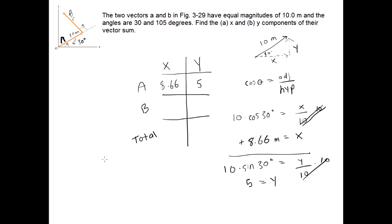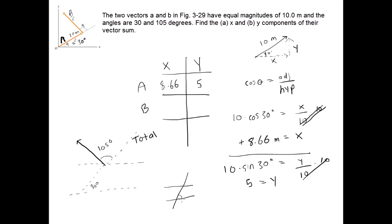Finding the components of vector B is a little more difficult because of the direction it's pointing. Vector B is pointing up and to the left, acting at an angle of 105 degrees. Using basic geometry, since two parallel lines are cut by a third line, the 30 degree angle here equals the 30 degree angle there. Adding these together gives 135 degrees for that whole angle, which means the remaining angle we'll work with is 45 degrees.